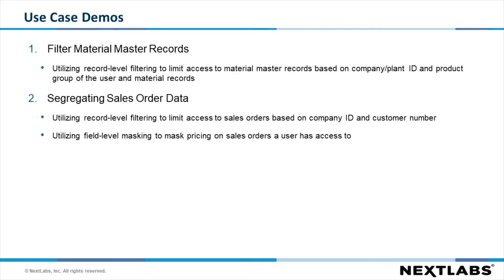We will demonstrate two ways the DAE can be used to segregate data in joint ventures, divestitures, and acquisitions. First, we will show how DAE can be used to filter the material master records based on the company ID and the product group of the user and of the material records. Then we will show how DAE can be used to segregate sales order data by company ID and customer ID, and how the net value of the sales order can be masked for the records that a user is able to access.